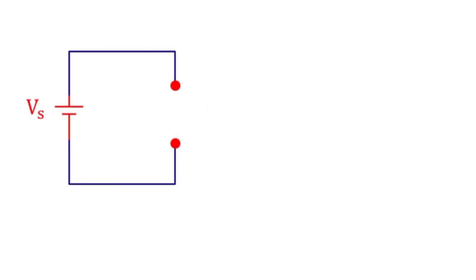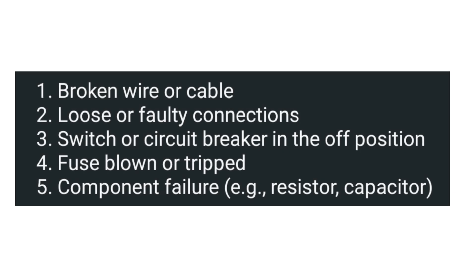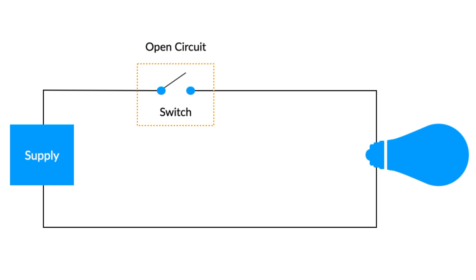The open circuit can occur by breaking of a wire or cable, and also it can happen due to loose or faulty connections. Sometimes due to component failures we can see an open circuit, and also by opening or turning off the circuit breaker we can see a case of open circuit.